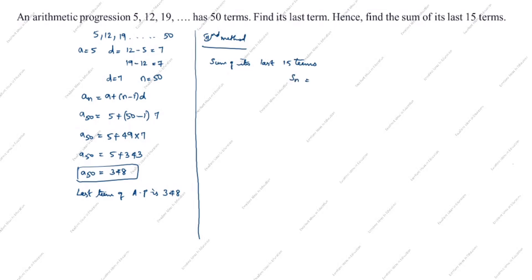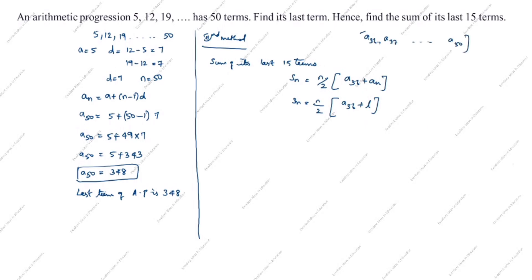Sₙ is equal to n by 2, open the bracket, first term plus last term. Here Aₙ is the last term. The last 15 terms go from A₃₆ to A₅₀ — that is 50 minus 36 equals 14, plus 1 equals 15 terms. Now we calculate A₃₆: a₃₆ is equal to 5 plus 36 minus 1 into 7, which is 5 plus 35 into 7, equal to 5 plus 245. A₃₆ is equal to 250.